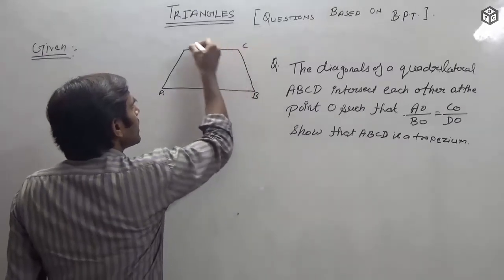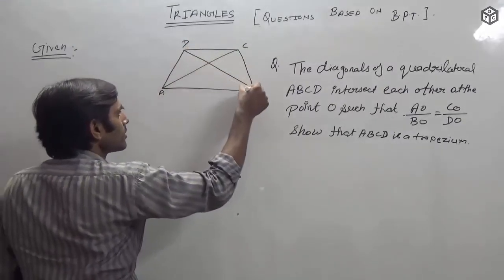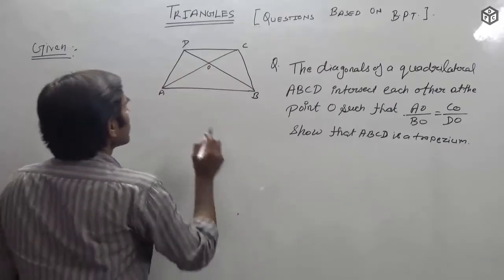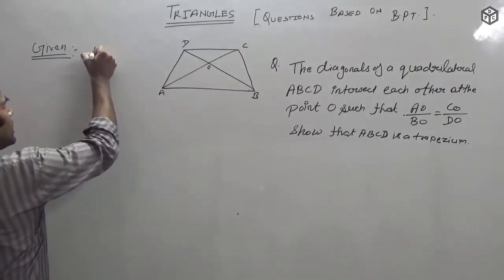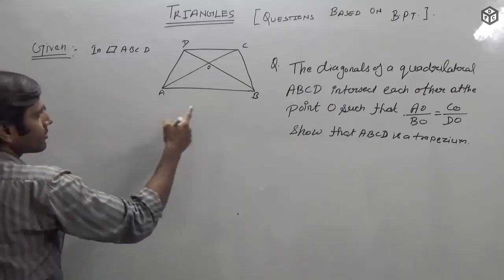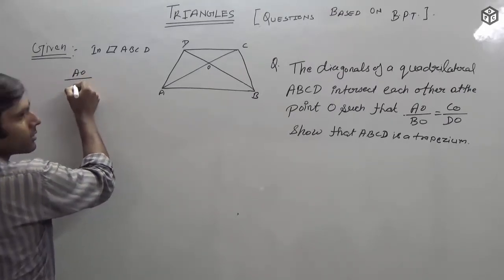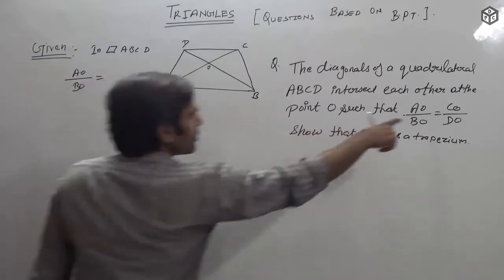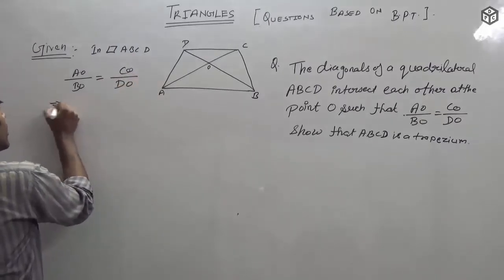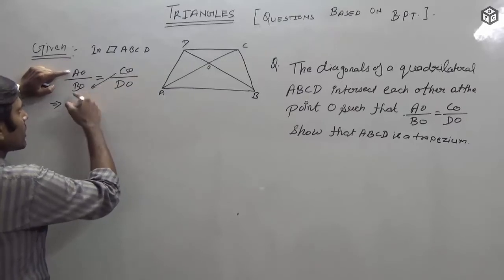We label the vertices A, B, C, and D. The diagonals are AC and BD, and they intersect at point O. Given: in quadrilateral ABCD, AO upon BO is equal to CO upon DO.